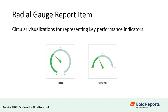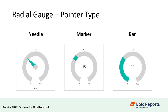Radial gauges are circular visualizations for representing key performance indicators. In Bold Reports, we have provided a radial gauge widget with half circle and auto variants. The auto type is used to provide custom start and sweep angles. The radial gauge has three pointer types: needle, marker, and bar.